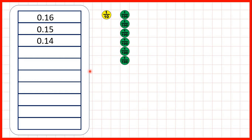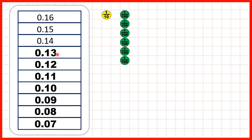Now, let's practice counting backwards in tenths or hundredths. So first, we have 0.16, 0.15, then 0.14. So what are the next seven numbers in this sequence? Well, we can see that we're counting back in hundredths, because it's the hundredths digit that's changing.